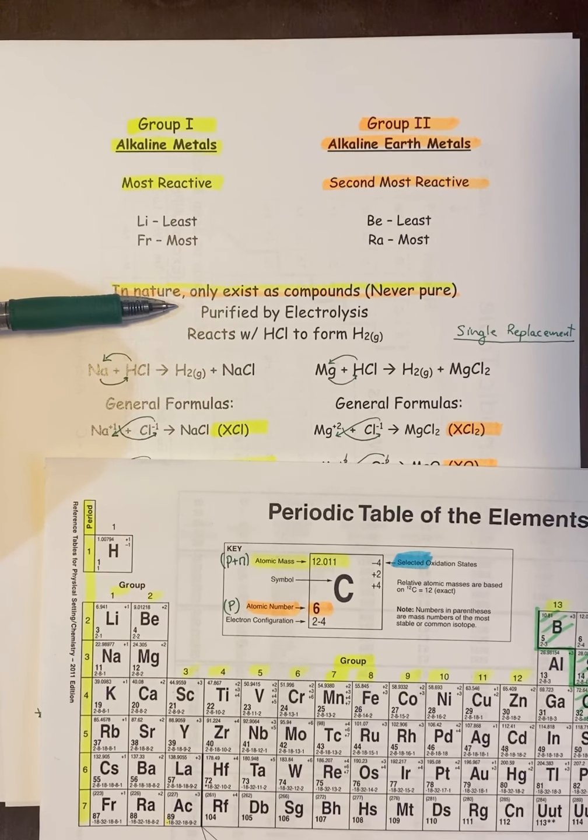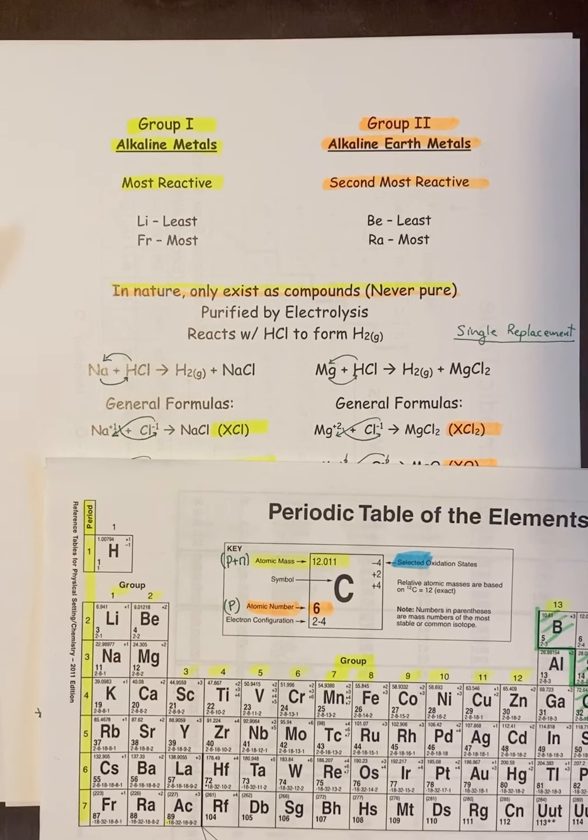You purify them by a process called electrolysis. And these guys react with HCl to form H2. Right now, these are just factoids. Later on in the year, when we learn a little bit more, we'll actually be able to do these reactions. These are called single replacement reactions.